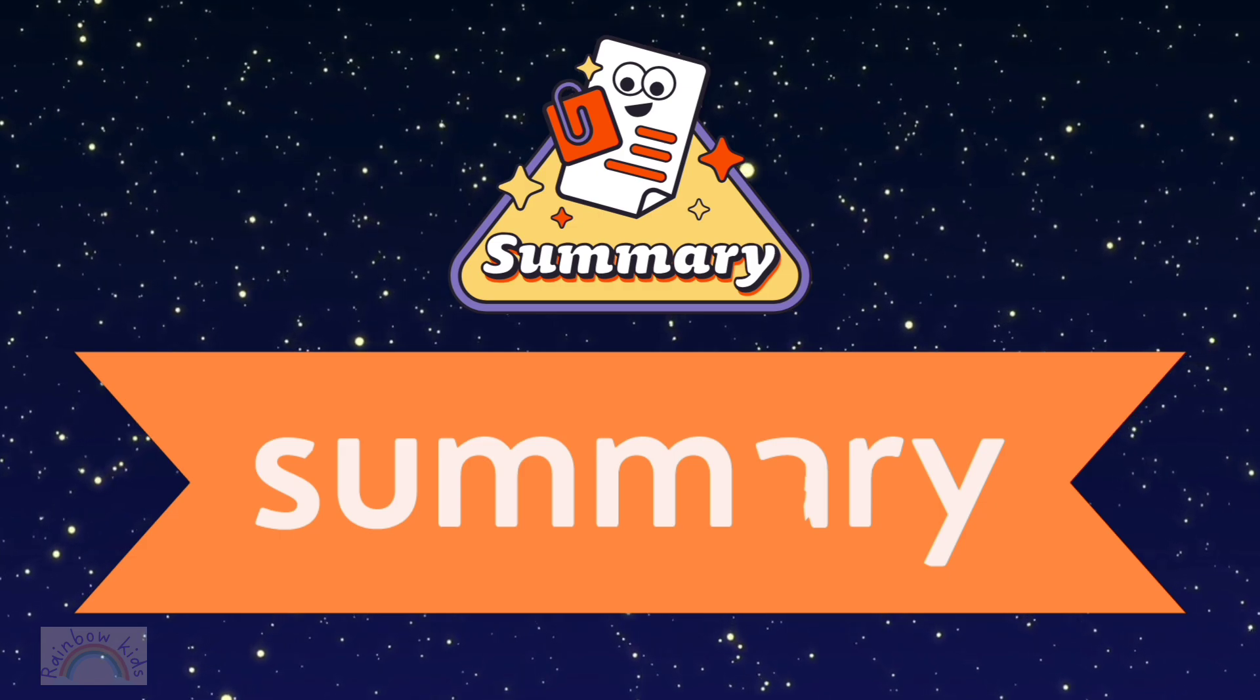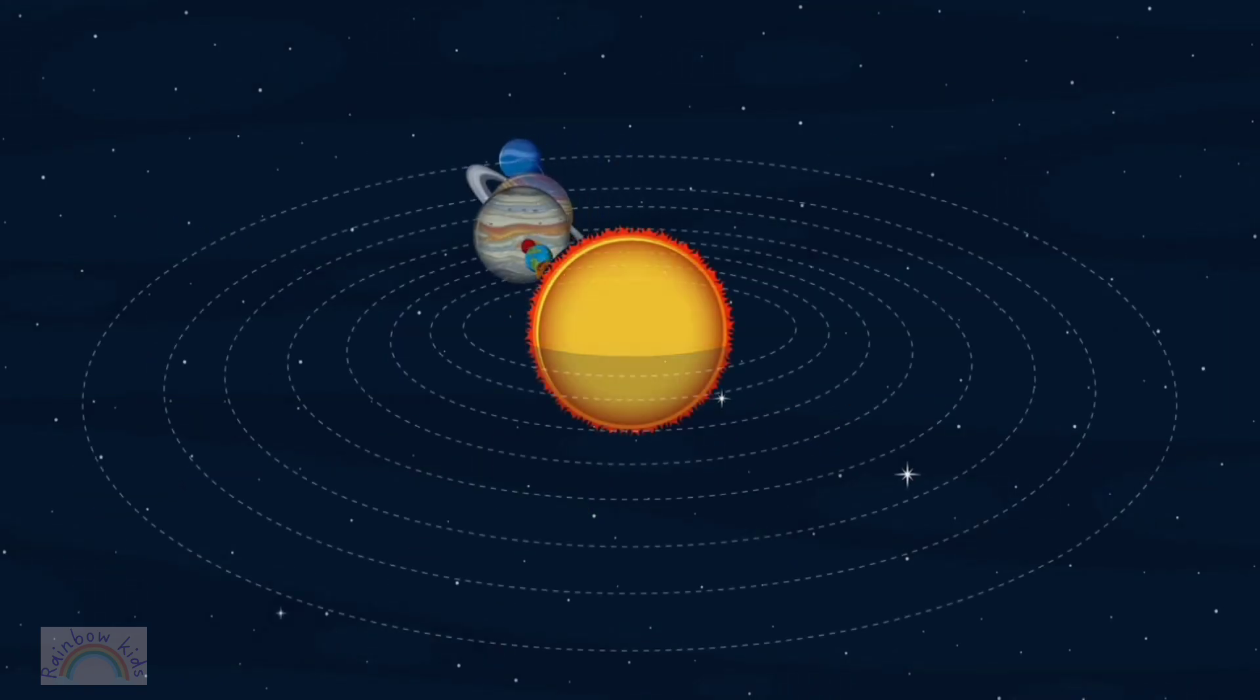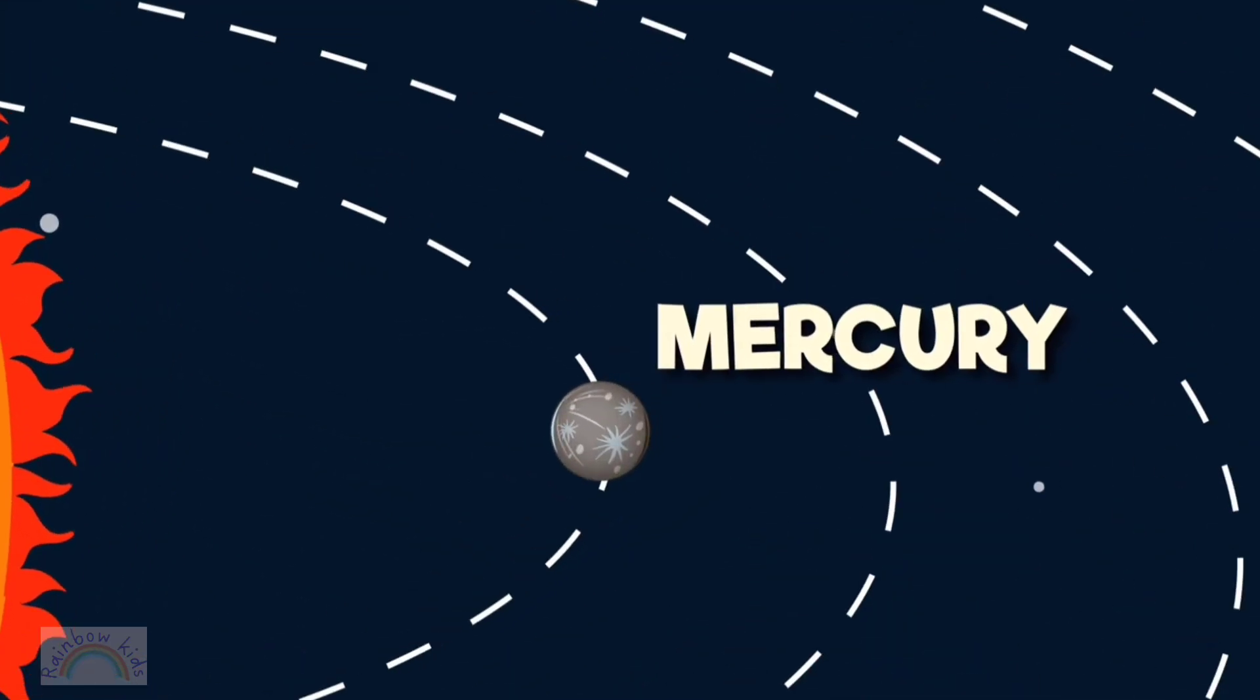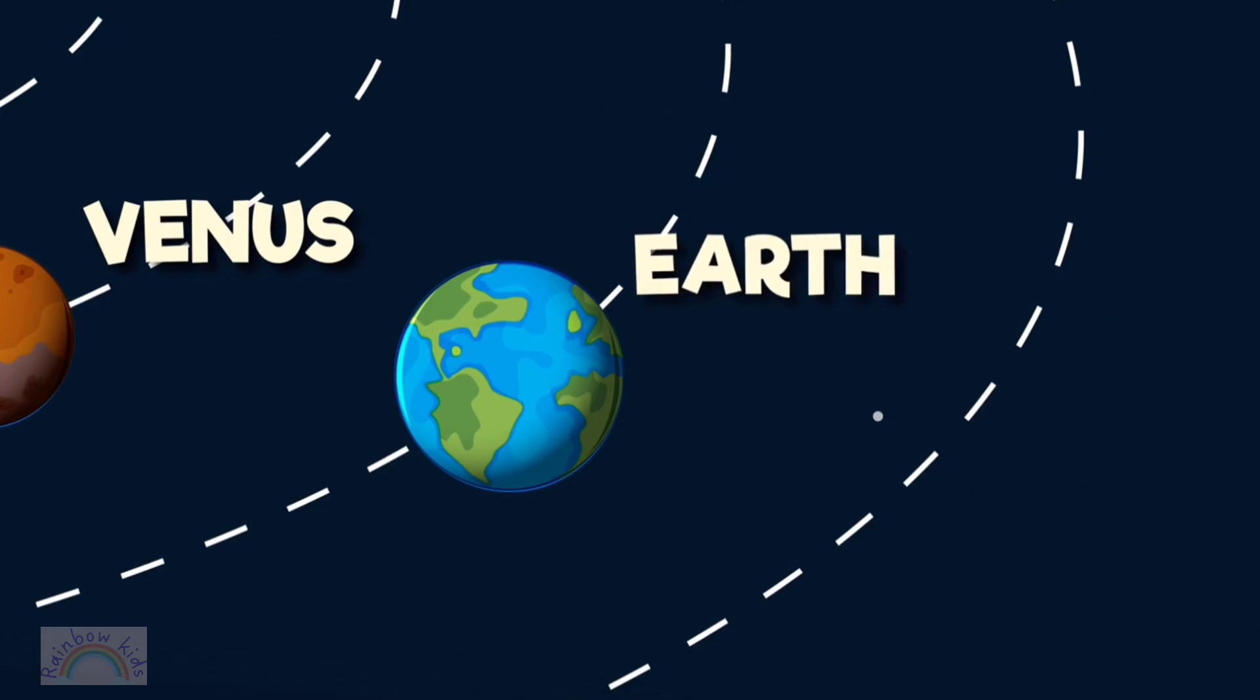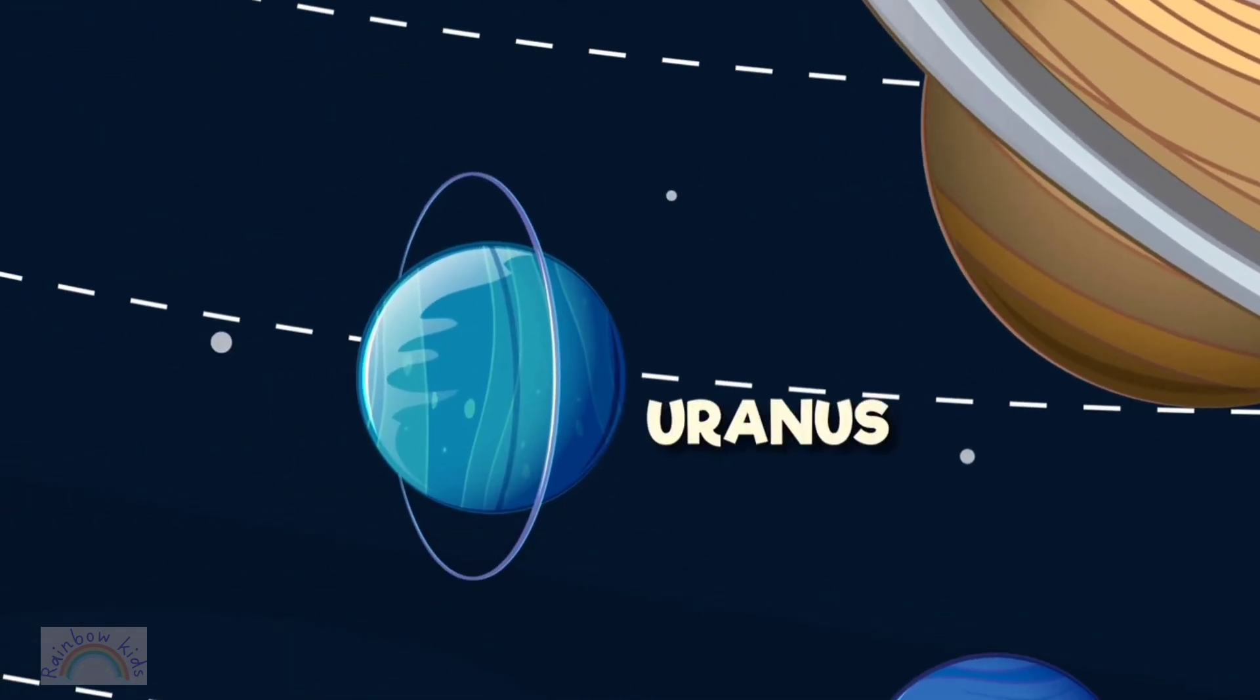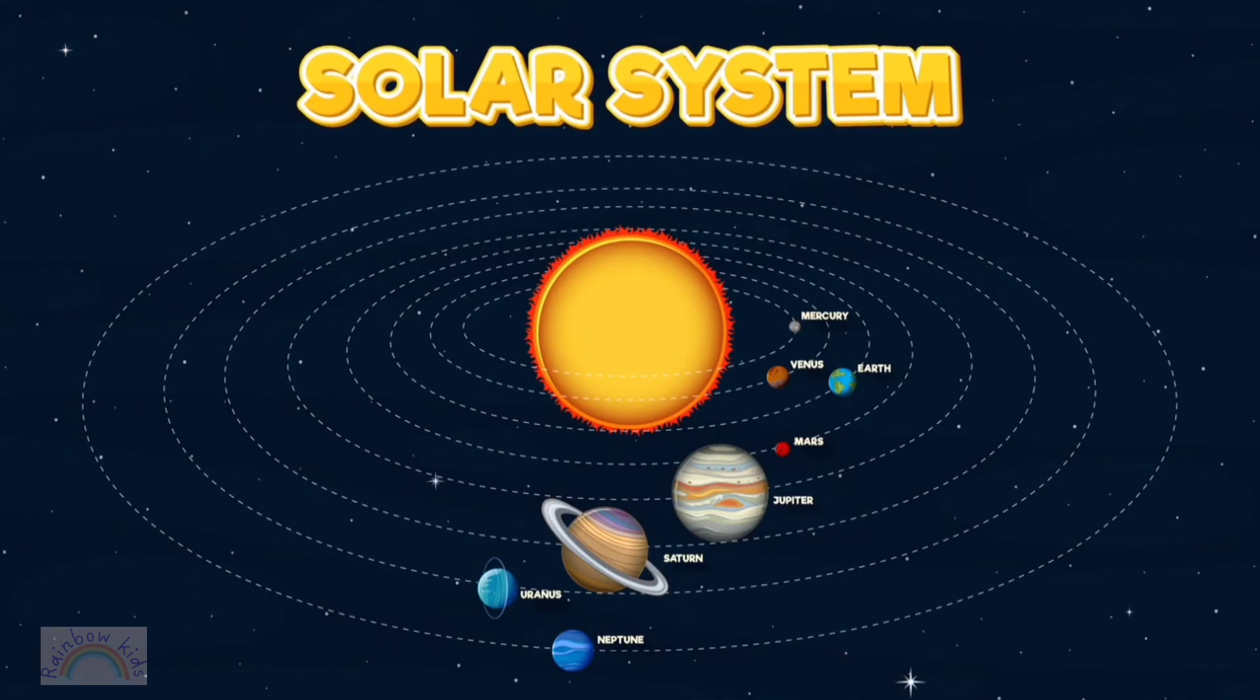Summary. Solar system. In the center is the Sun. Around the Sun there are 8 planets. They are Mercury, Venus, Earth, Mars, Jupiter, Saturn, Uranus, Neptune. This is our solar system.